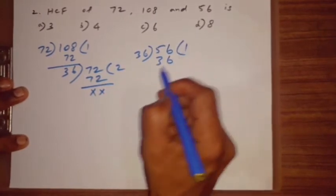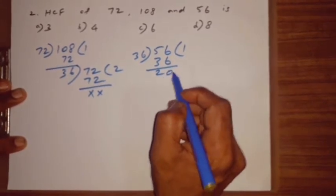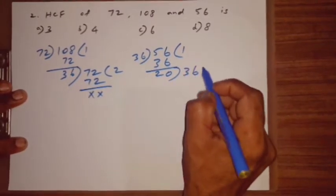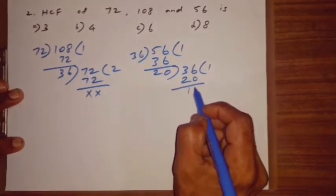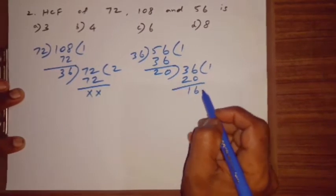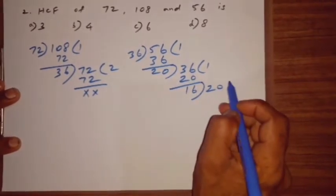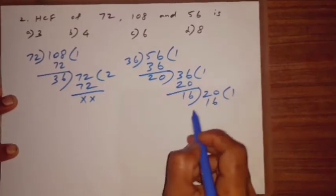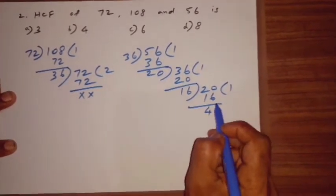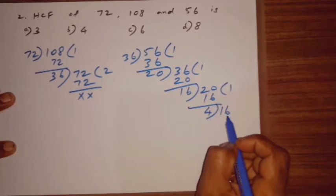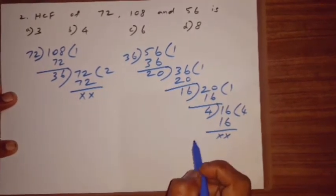56 minus 36 is 20. Last divisor 36; 36 also goes into 1.20 with balance 16. Again, 16 also goes into 20. Last divisor 16. 16 by 20: 20 minus 16 is 4. Last divisor 16; 4 fours are 16.